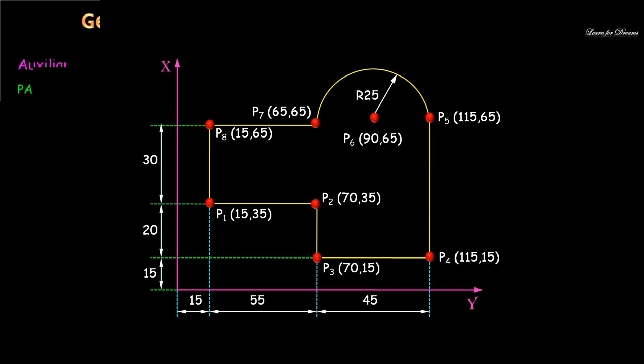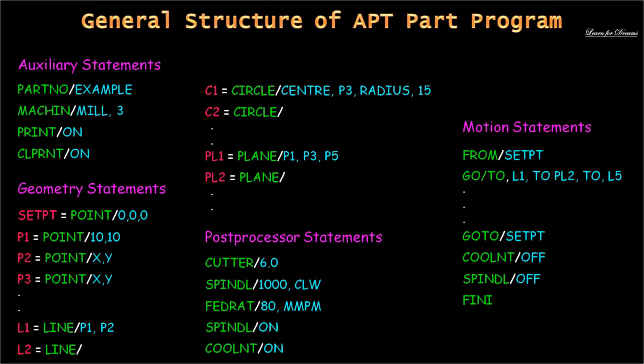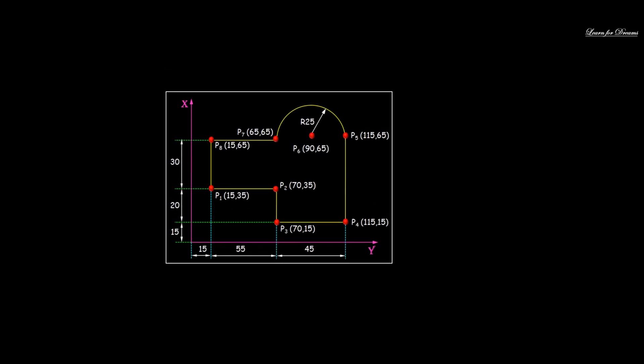This is a general structure of APT part program. This we have seen in the previous video, so let's start the programming for this part drawing. First we have auxiliary statements in which we have 4 statements we have written in the previous video.